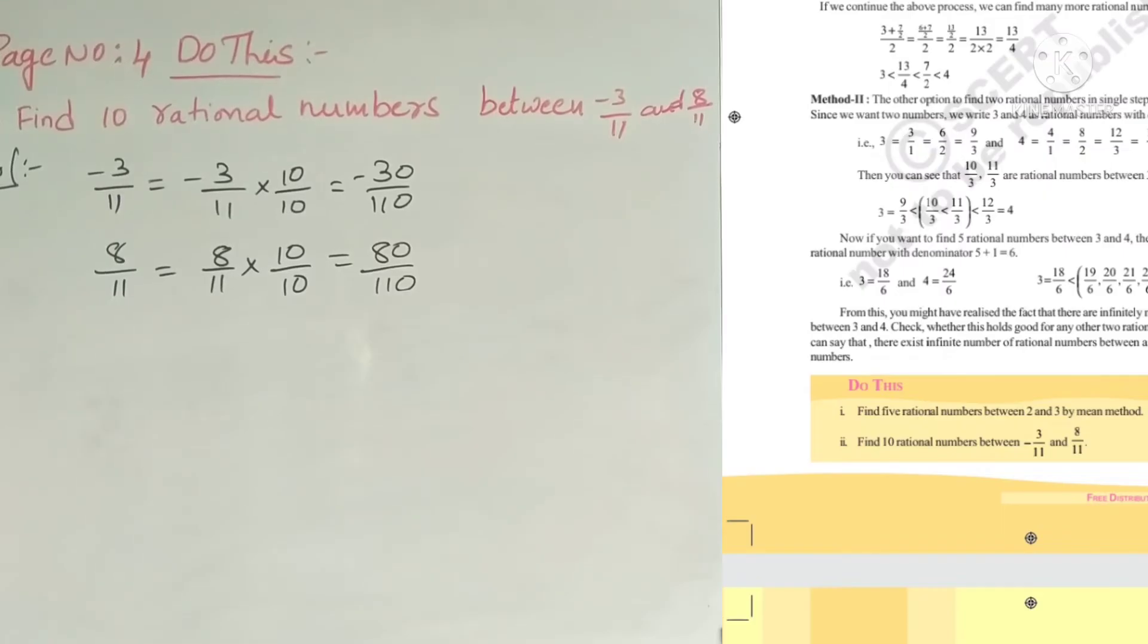Now here is our second problem: find 10 rational numbers between minus 3 by 11 and 8 by 11. We will multiply by 10 by 10 to get minus 30 by 110.